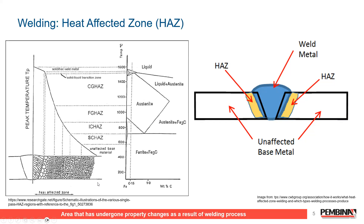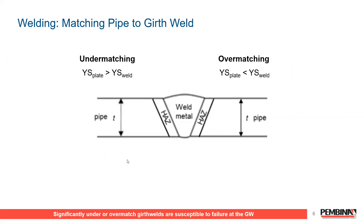In the unaffected base metal, the grain structure may look one way. However, in the heat affected zone, there is a real range in how the crystalline structure has changed and the phases present. The welding process changes the steel from one phase to another, and the rate of that change determines what the microstructure looks like inside the HAZ area.